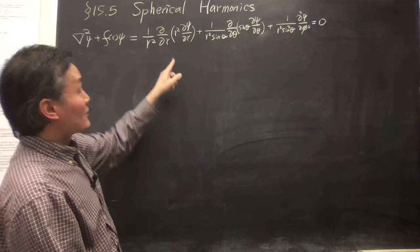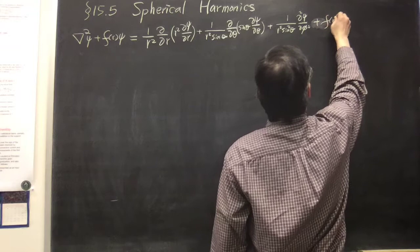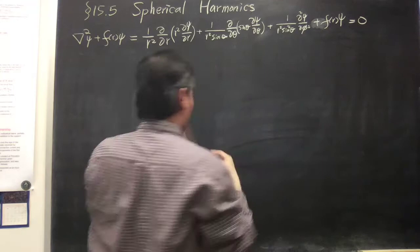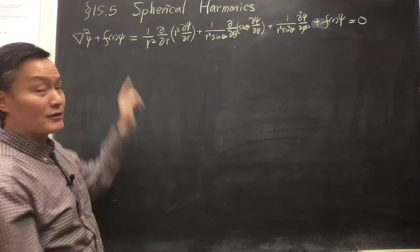It should be an F squared FR term. So if F is zero, you get back the Laplacian equation. If F is a constant like K squared, you get the Helmholtz equation.